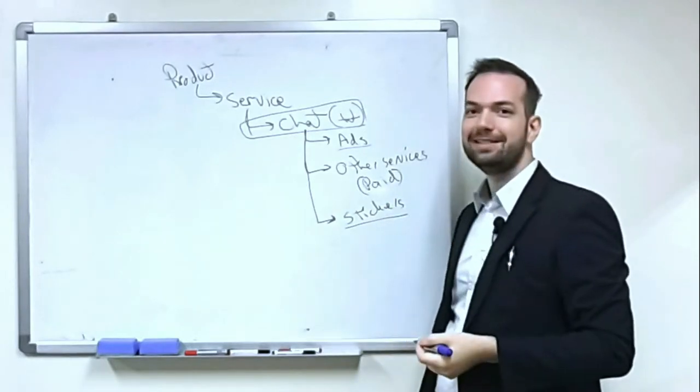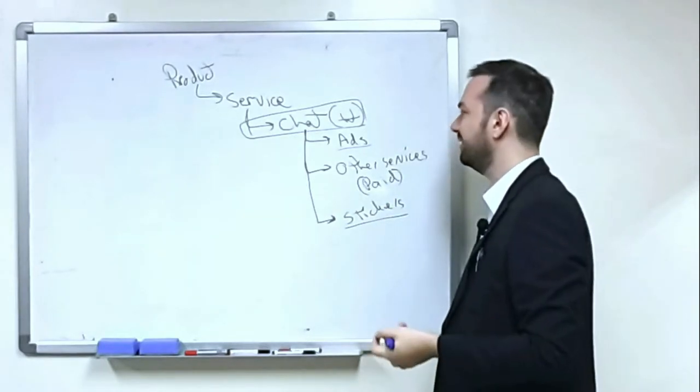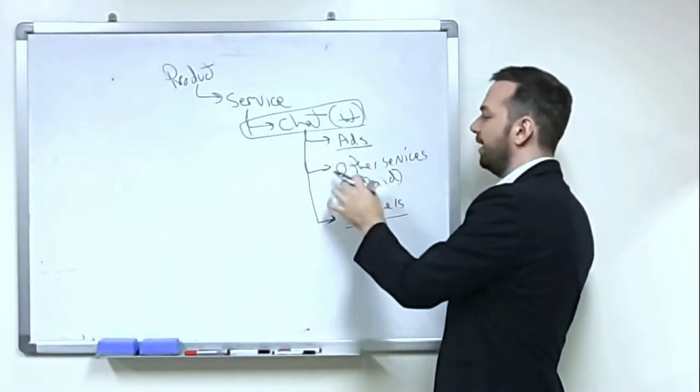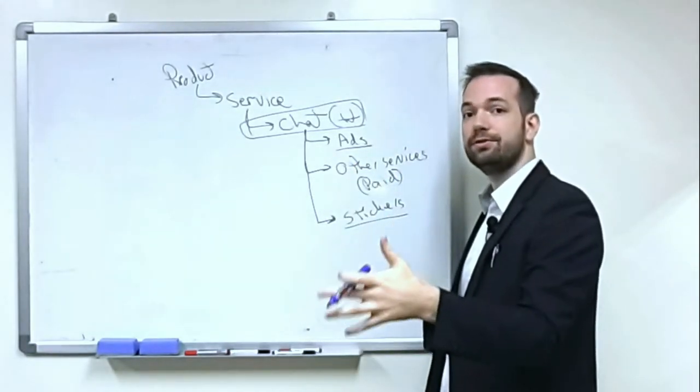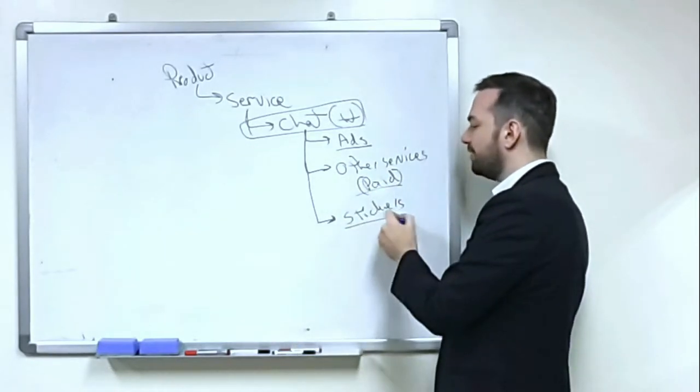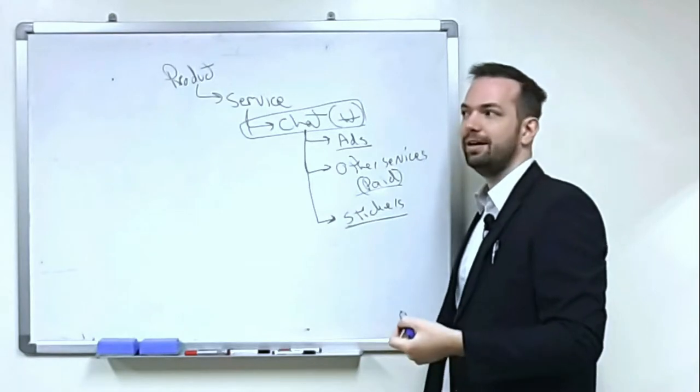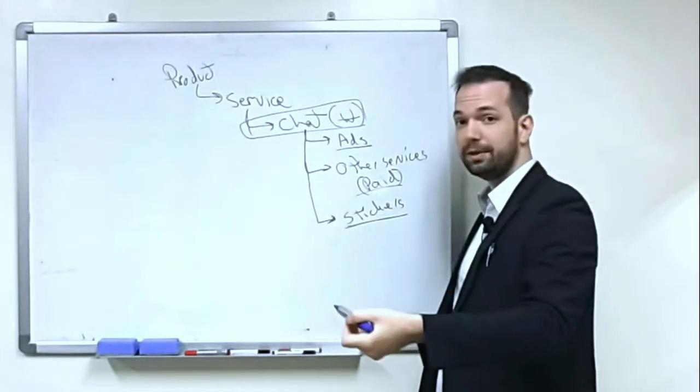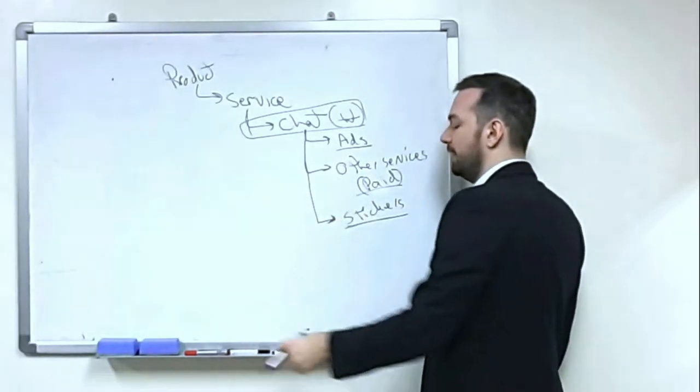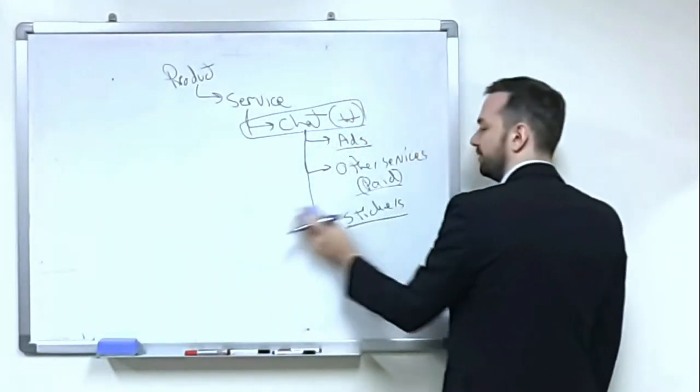We'll talk about one instance where it could make some money in a second. But basically, they make their money through advertising on the desktop. Other services are channeling users into other services through the chat application. And then those are paid services. And then extra things like stickers where people actually pay a little bit of money. And then they can use those features in the chat.